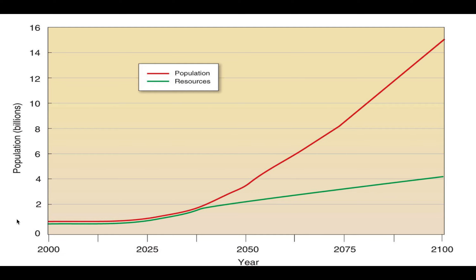Looking at Malthus's theory on the line chart, population and resources are fairly even up to about 2025. However, there is a prediction that resources will not keep up with exponential population growth. This is most relevant where 95% of population growth is occurring — in less developed regions like East Asia, Southeast Asia, South Asia, and sub-Saharan Africa.